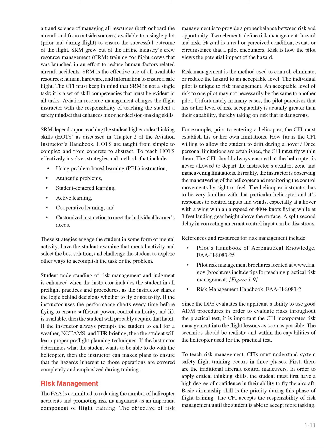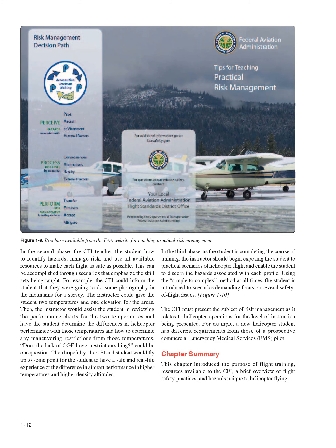The scenario should be realistic and within the capabilities of the helicopter used for the practical test. CFIs must understand that system safety flight training occurs in three phases. First, there are traditional aircraft control maneuvers — the student must first have a high degree of confidence in their ability to fly the aircraft, and basic airmanship skill is the priority. The CFI accepts the responsibility of risk management until the student is able to accept more tasking. In the second phase, the CFI teaches the student how to identify hazards, manage risk, and use all available resources to make each flight as safe as possible, accomplished through scenarios that emphasize the skill sets being taught. For example, the CFI could inform the student they were going to do photography in the mountains, give two temperatures and one elevation, then assist the student in reviewing performance charts to determine differences in helicopter performance and any maneuvering restrictions.